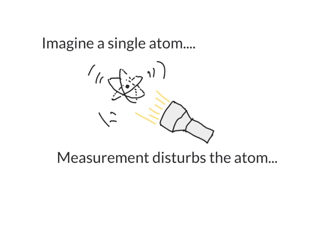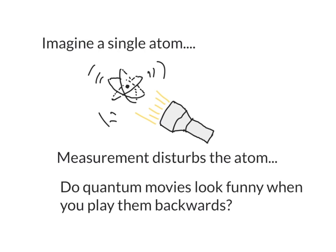But if we're thinking about looking at atoms you'd have to shine light on them and that light is made out of photons and those photons push the atom around. That's a basic feature of quantum mechanics that measurement necessarily disturbs the atom. So the real question that we want to answer is do quantum movies look funny when you play them backwards.